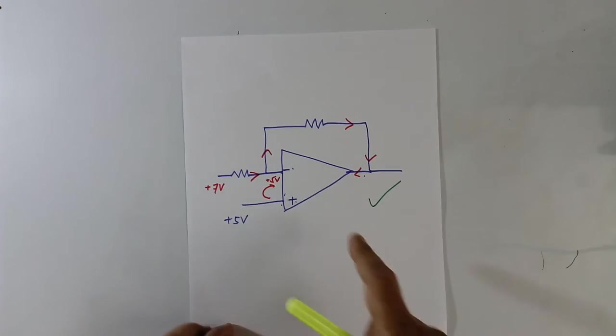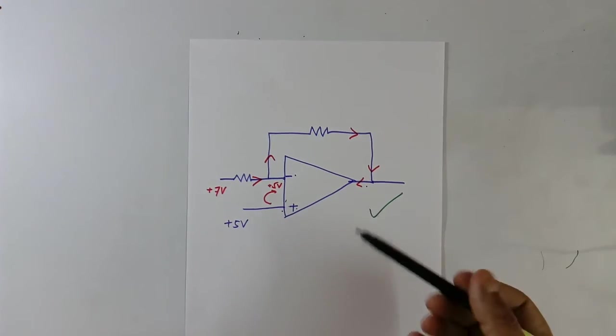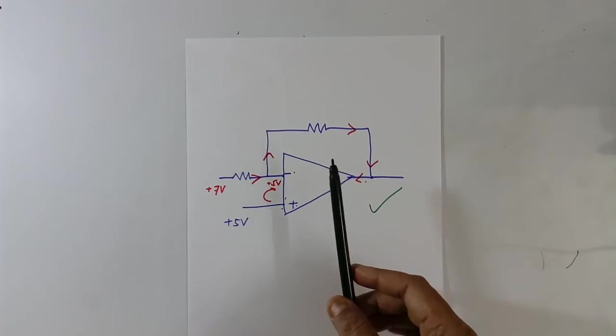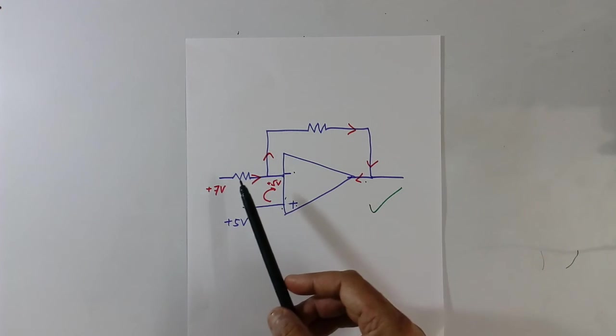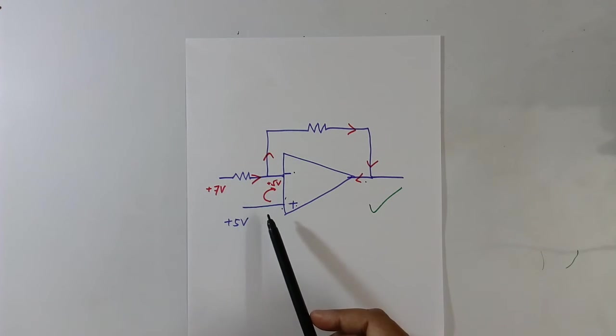Okay. In this circuit, arrangement is very common. Everybody knows the gain of the operational amplifier will be this ratio divided by this ratio and plus this voltage.